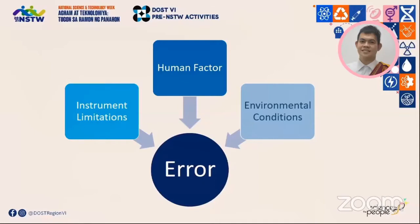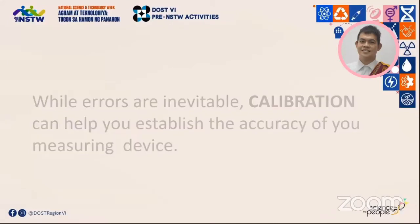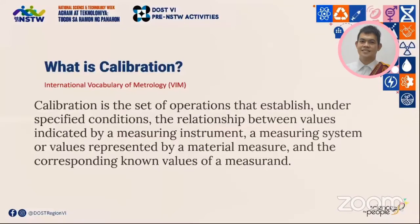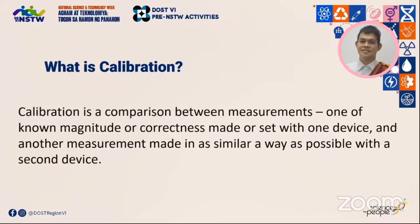Although there is no such thing as a perfectly accurate measurement due to some errors here and there, our pursuit for better measurement should not be hindered. There are in fact ways for us to circumvent these errors, one of which would be calibration — a process that can help us establish the accuracy of our measuring device. According to the International Vocabulary of Metrology or VIM, calibration is a set of operations that establish under specified conditions the relationship between values indicated by a measuring instrument or measuring system and the corresponding measurement.